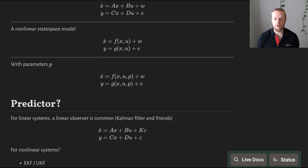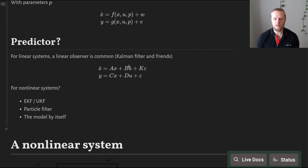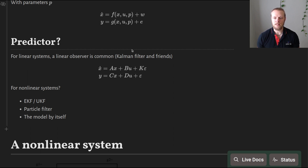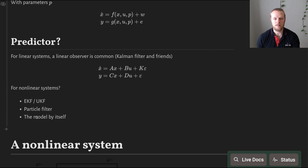We have talked a lot about predictors. For a linear system, a predictor might use a linear correction where we compute the residual and use that to correct the state. For linear systems with Gaussian noise, the Kalman filter is optimal. For a non-linear system it's more tricky — if noise is Gaussian we can use a non-linear variant like the extended Kalman filter or unscented Kalman filter. If noise is not Gaussian or not additive, we might use a particle filter or a moving horizon estimator.